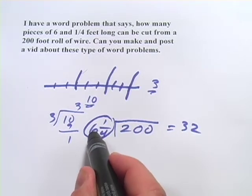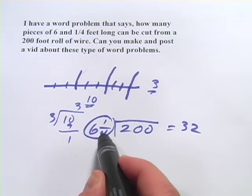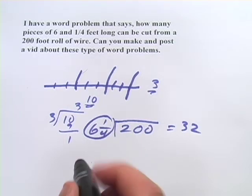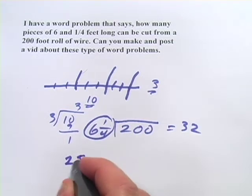and remember to do that I would multiply the number here by the denominator, 6 times 4 is 24, and then add it to the top, I'd get 25 fourths.